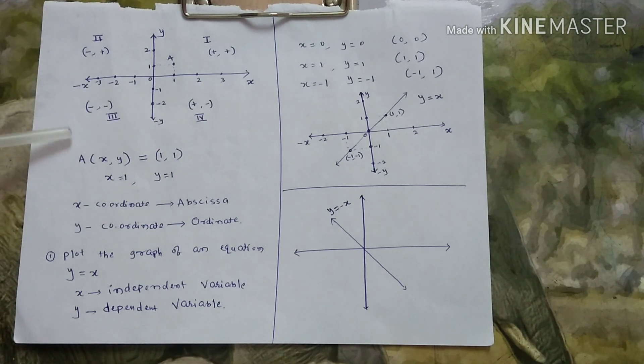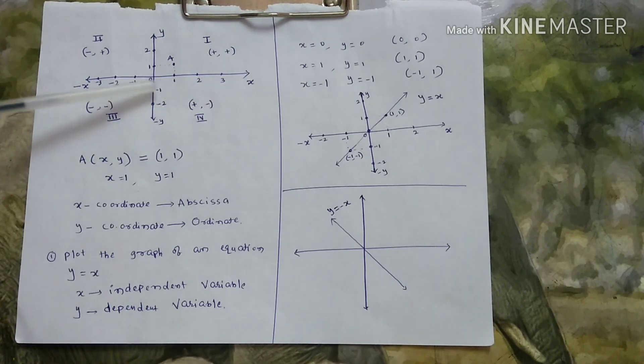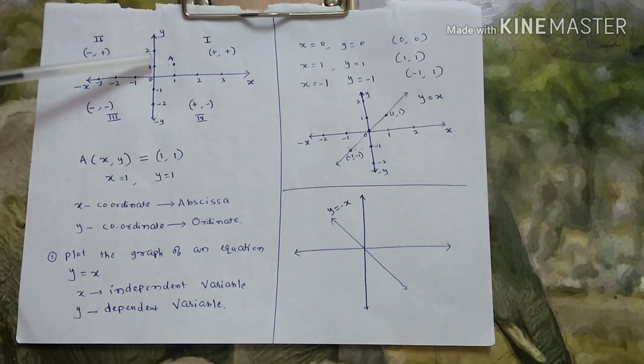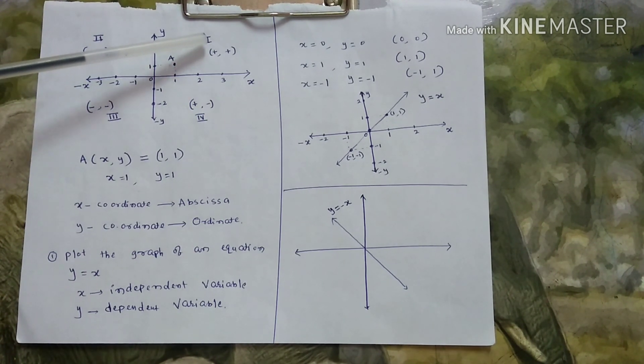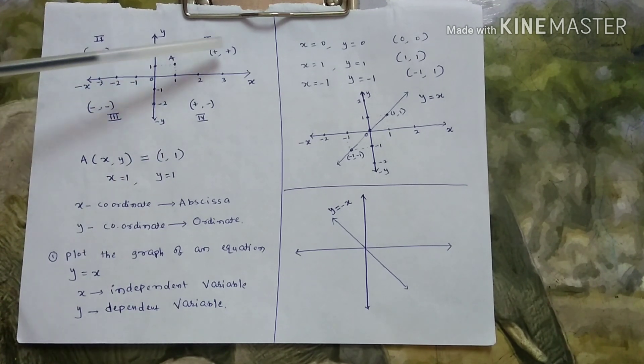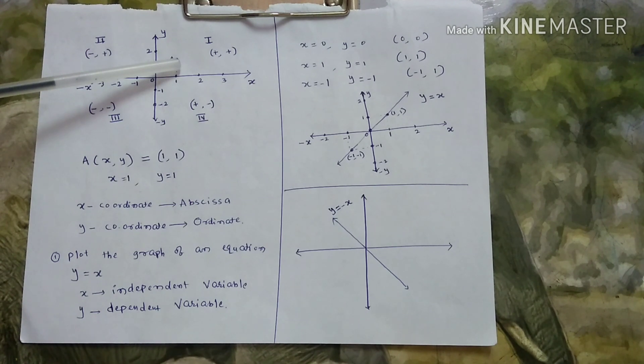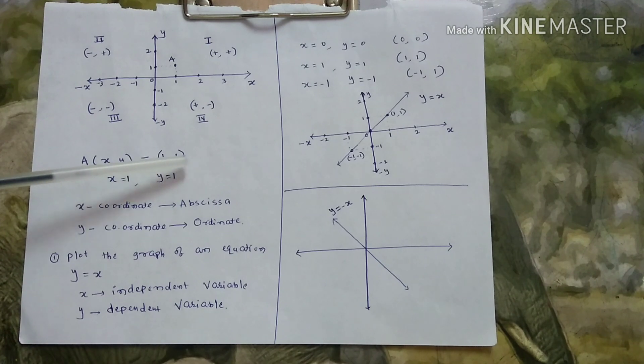These are coordinates of x-axis. Or, x-coordinates. So, along this direction, all positive values are there. Positive of x-coordinates. Along this direction, y-coordinates, positive. This is one, two, three and so on. So, this quadrant, I am calling quadrant one. X-coordinate is plus. Y-coordinate is plus.